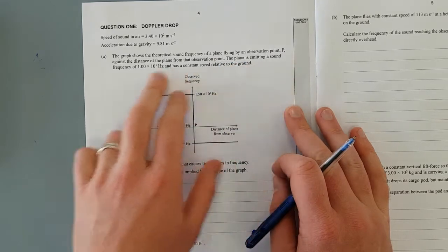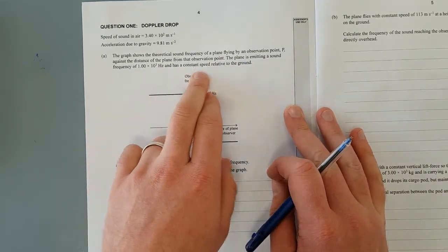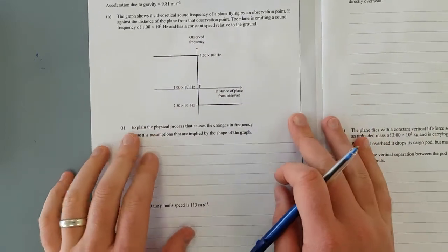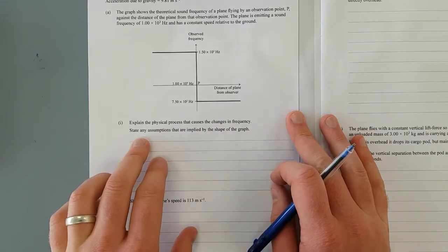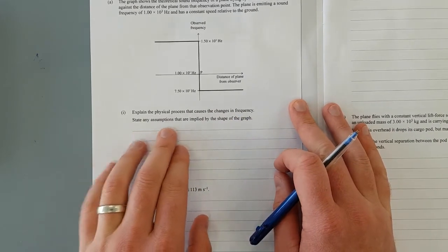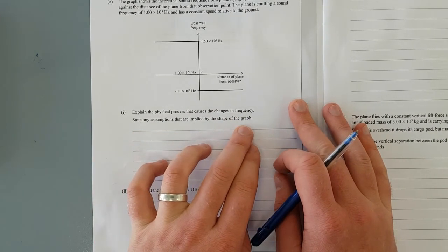The plane is emitting a sound of frequency 1 times 10 to 3 Hz and has a constant speed relative to the ground. Explain the physical process that causes the change in frequency. State any assumptions that are implied about the shape of the graph.